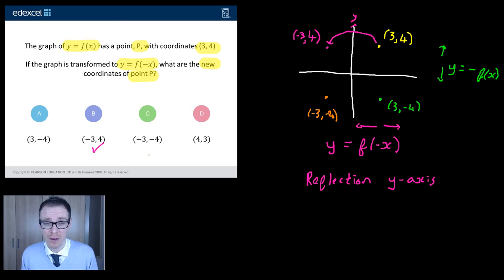But I can see why students have gone for it, right? Because they've thought, okay, minus x there. Let's just make each of our points minus. So, it used to be positive 3 and positive 4. Let's make it (-3, -4). So, watch out for that little mistake.